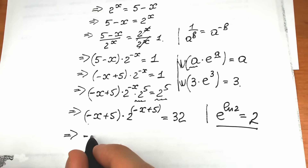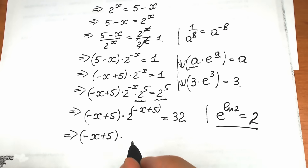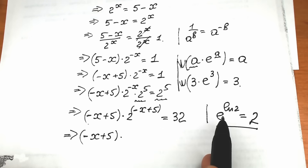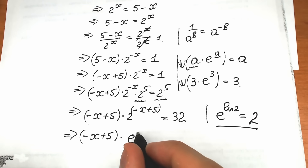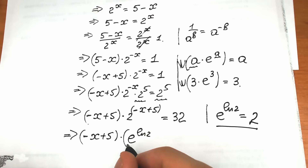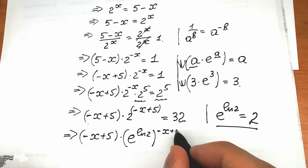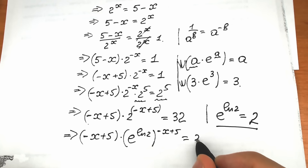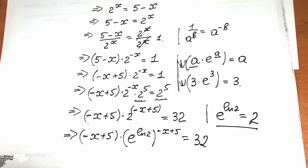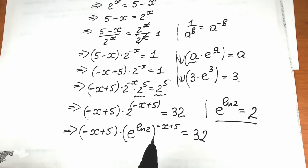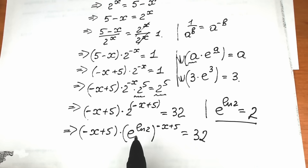So we have minus x plus 5 times e to the power natural log 2, all raised to the power minus x plus 5, equal to 32. Using the property (a^x)^y = a^(x·y), we can multiply the powers: this gives us minus x plus 5 times e to the power natural log 2 times minus x plus 5, equal to 32.